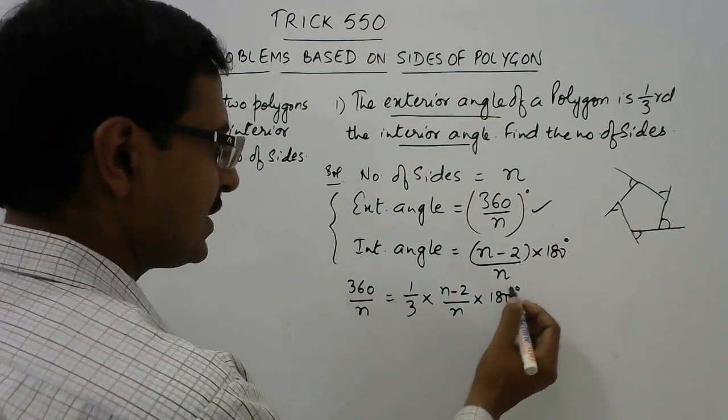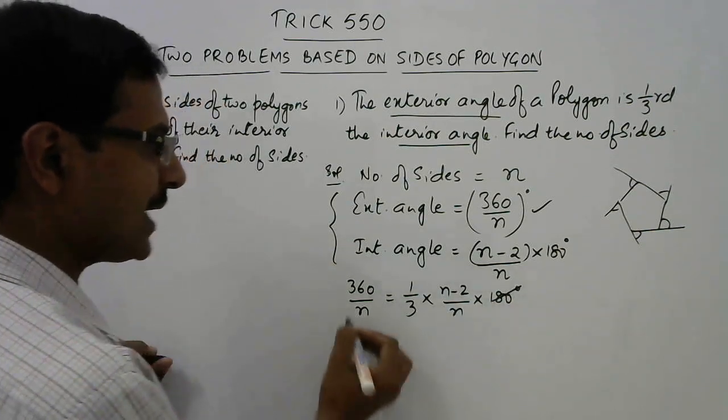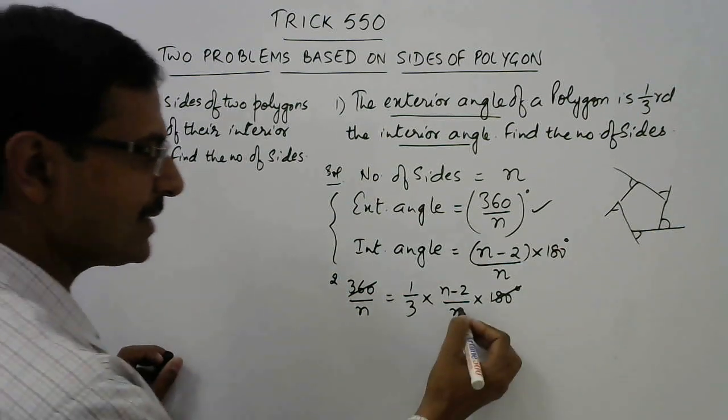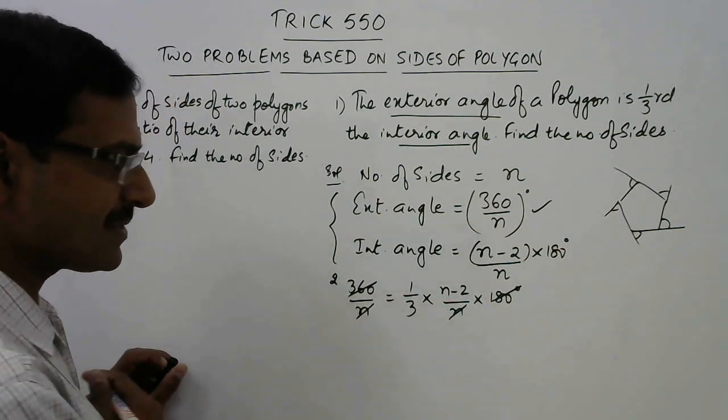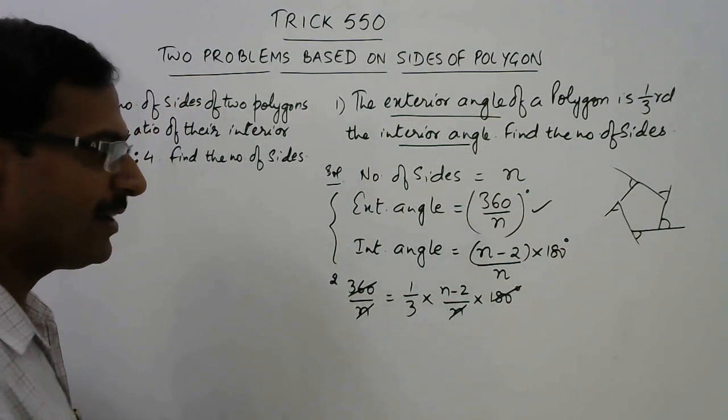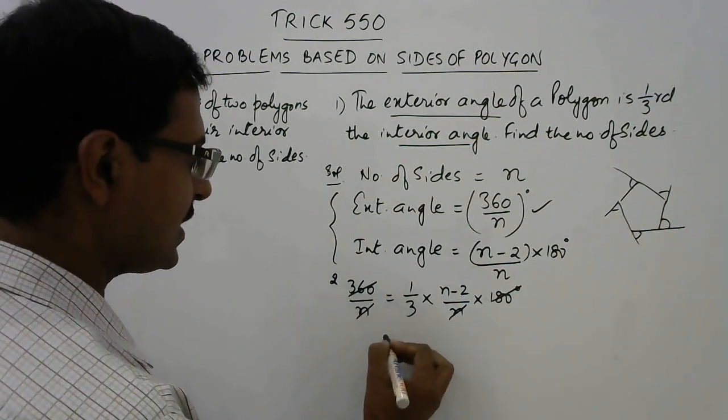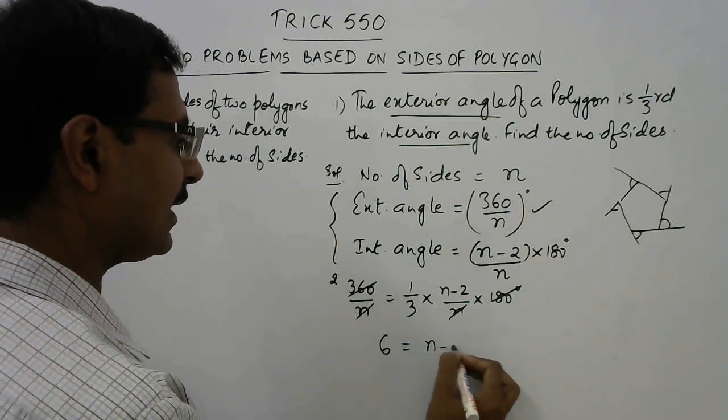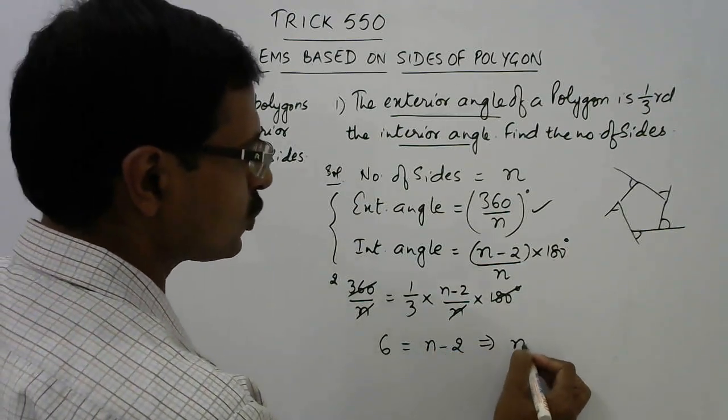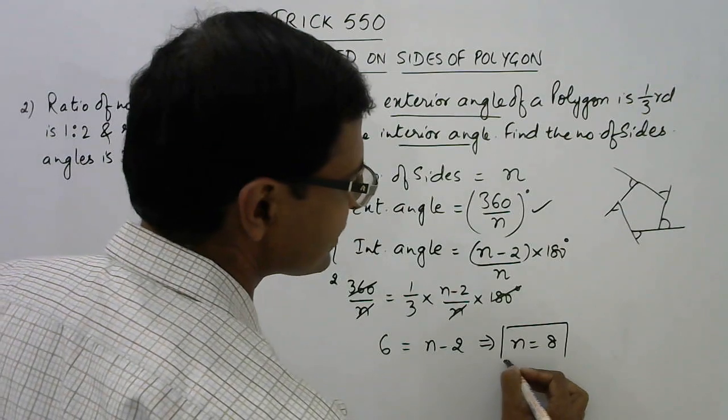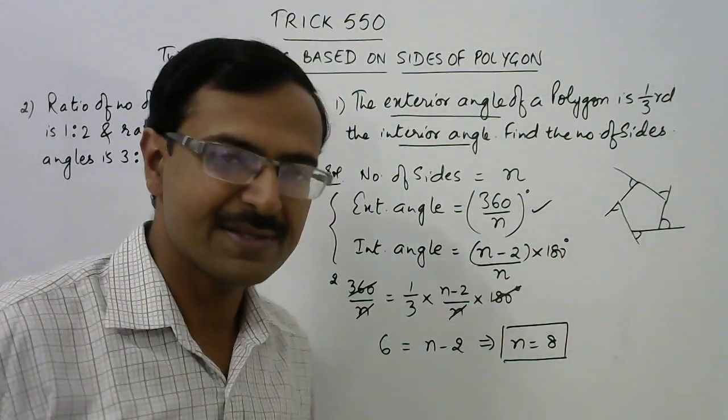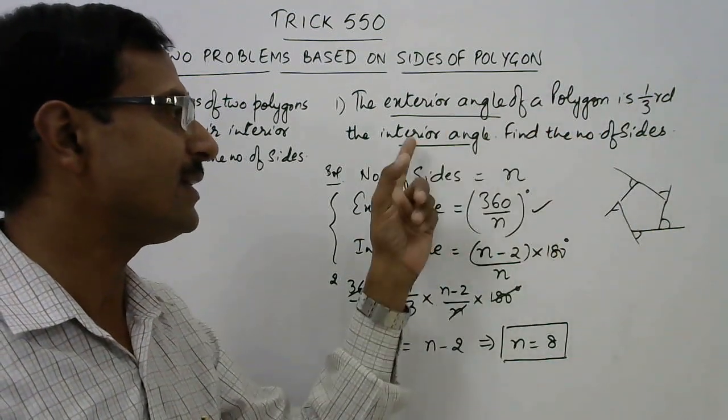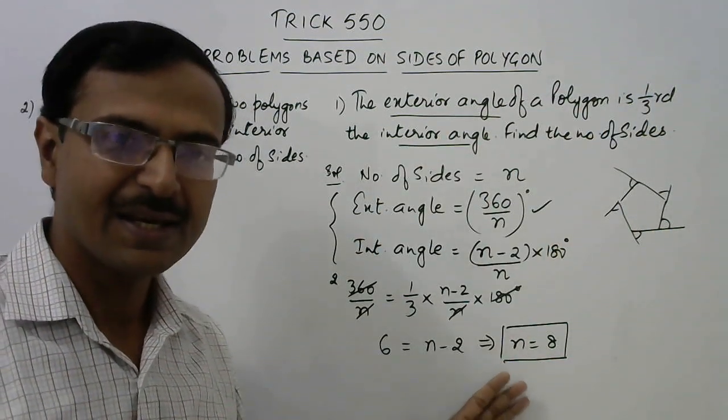So let us do it. See, 180 goes exactly two times and this n in the denominator gets cancelled. So what we have here is 2 times 3, 6 equals, in the numerator we have n minus 2. So n comes out to be 8. Therefore, the number of sides of the polygon is 8. So whenever the exterior angle is one-third the exterior angle, then the number of sides is 8.